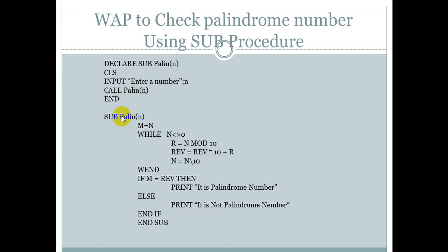Inside the sub procedure palind, the original number is stored in M. The while-when loop is used to reverse the number, and the result is stored in REV. If the original number M equals REV, then it is a palindrome number; else it is not a palindrome number.